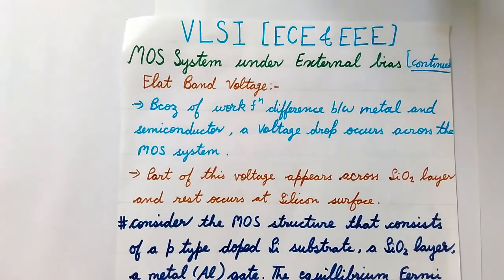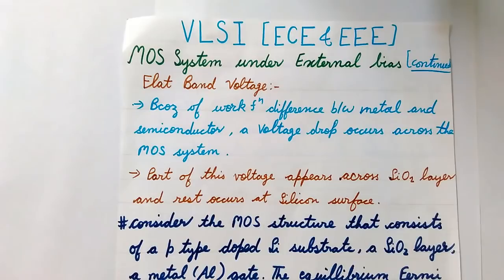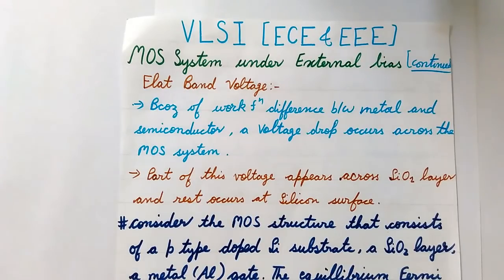First, let's recall from our previous lecture the three main components of the MOS system. At the gate we can have metal or polysilicon at the top. At the bottom we have the doped p-type silicon substrate, and sandwiched in between is the SiO2 or insulating layer. When all three individual components are stacked together, we form the MOS structure.